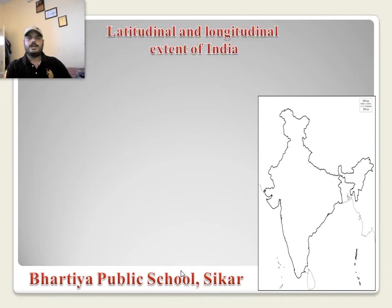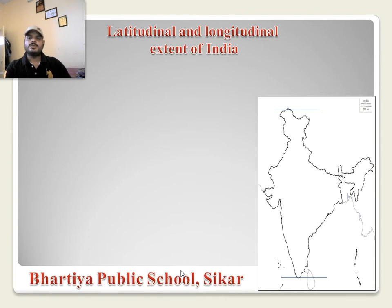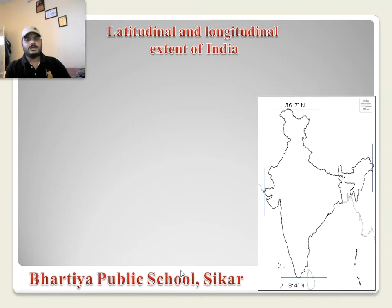The first topic is the latitudinal and longitudinal extent of India. You can see here these two lines — the southernmost latitude and the northernmost latitude. The southernmost latitude of India is 8 degree 4 minute north and the northernmost latitude of India is 36 degree 7 minute north. These two lines are the longitudes of India — the western longitude near Gujarat is 68 degree 7 minute east.